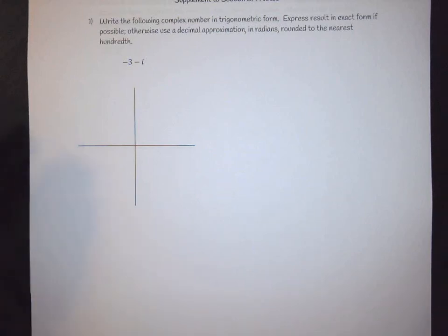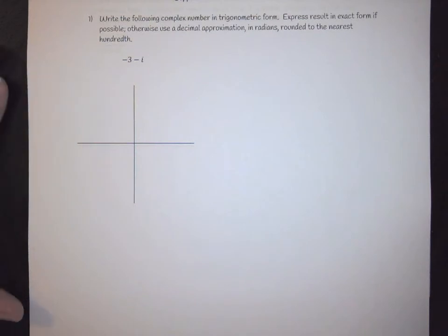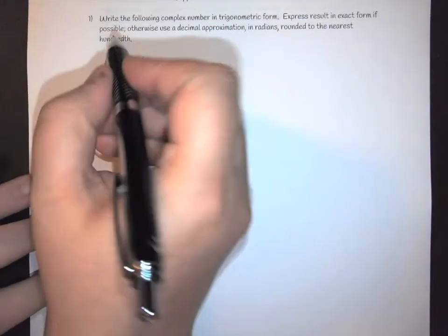In this video we are going to look at what happens if your triangles do not give you nice numbers, meaning what happens if you're actually working with radians. So here we're going to look at writing a complex number in trigonometric form. You want to express your result in exact form if possible, otherwise use decimals in radians and round to the nearest hundredth.